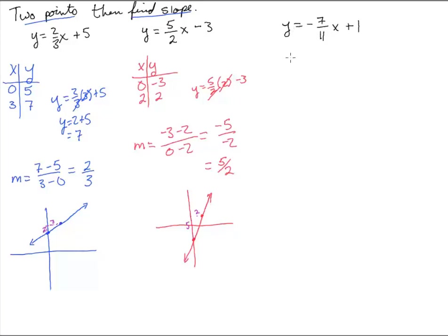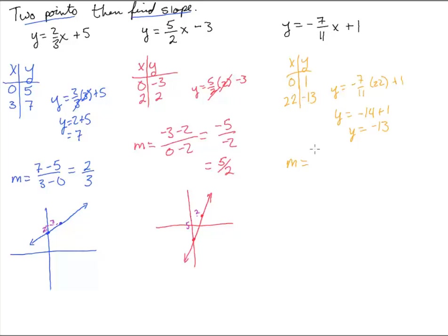And one more. Here we're going to have the x-y plot. Sticking a zero in, we get one — that's so nice. And for the next point, let's stick in 22 — that'll get rid of the 11. Y equals negative seven-elevenths times 22 plus one. We get negative 14 plus one, so y equals negative 13. For the slope, we take y minus y over x minus x: that's negative 14 over 22, and we need to remember the negative — negative seven over negative 11, so negative seven-elevenths.